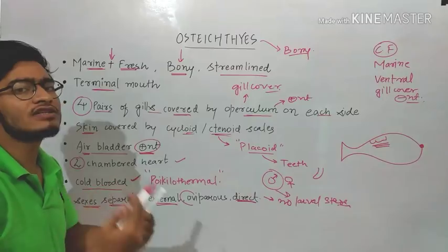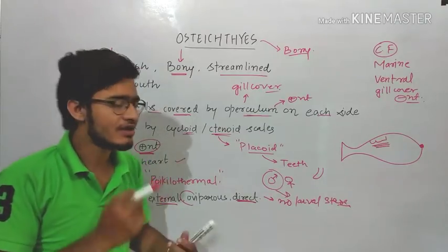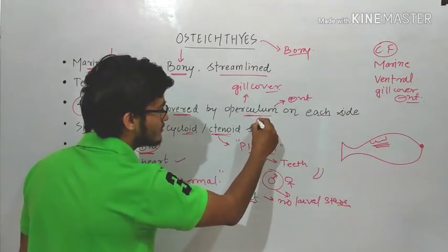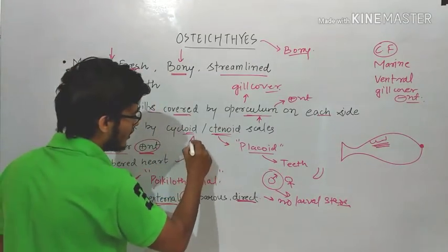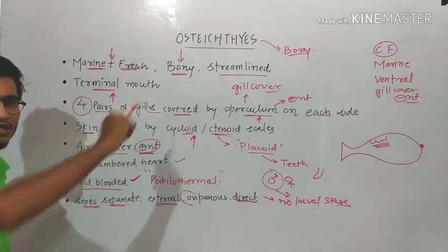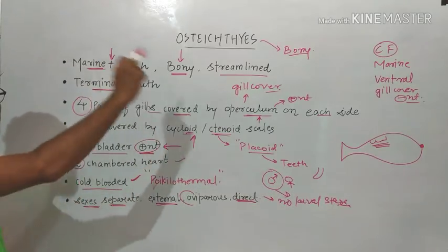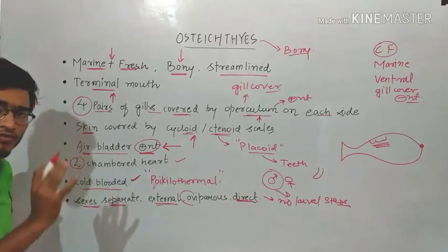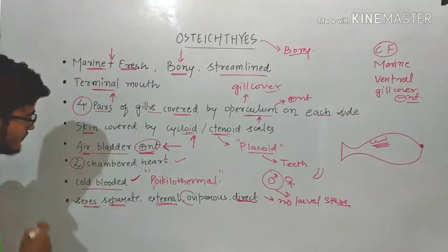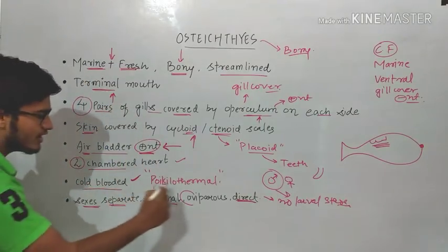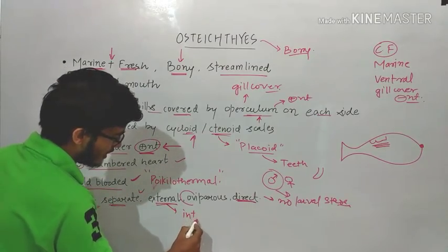The endoskeleton is bony in bony fishes; in cartilaginous fishes it is cartilaginous. The mouth is terminal in bony fishes but ventral in cartilaginous fishes. The operculum is present in bony fishes but absent in cartilaginous fishes. There are cycloid and ctenoid scales in bony fishes, but placoid scales in cartilaginous fishes. The air bladder is present in bony fishes but absent in cartilaginous fishes — that's why cartilaginous fishes have to swim constantly. Two-chambered heart and cold-blooded nature are the same characters in both. Fertilization is internal in cartilaginous fishes.